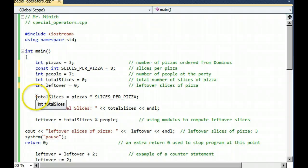So the first executable assignment statement multiplies pizzas times slices per pizza. Look at this new version of Visual Studio 2010. If you hold your mouse over a variable or a constant, it actually tells you what that constant or variable is equal to up to that point in the program.